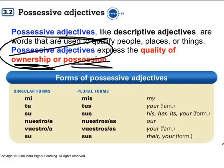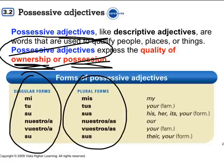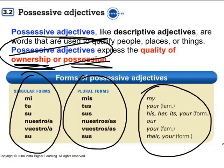And here are the forms right here: mi, mis, tu, tus, su, sus, nuestro, nuestra, nuestros, nuestras, vuestro, vuestra, vuestros, vuestras, su and sus. And here are all the translations right there.